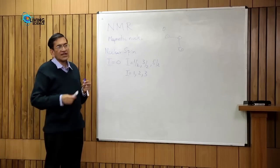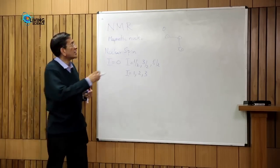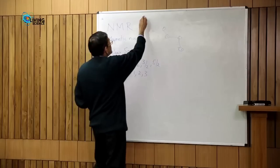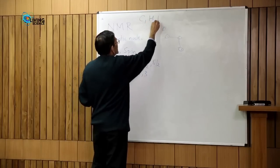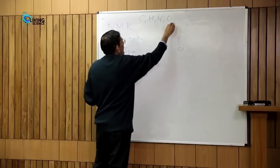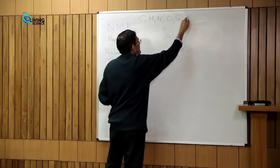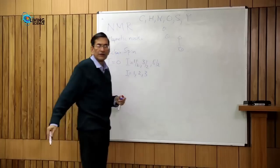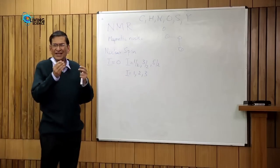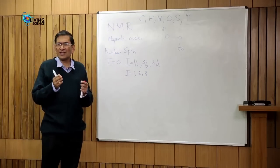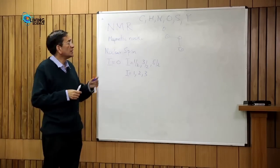What are the atoms in biological molecules? They are carbon, hydrogen, nitrogen, oxygen, sulfur, phosphorus. There may be a few other elements, but we would not worry about them.